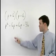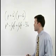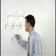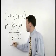Notice that our two middle terms will cancel each other out. So we have P squared minus 36 as our final answer.